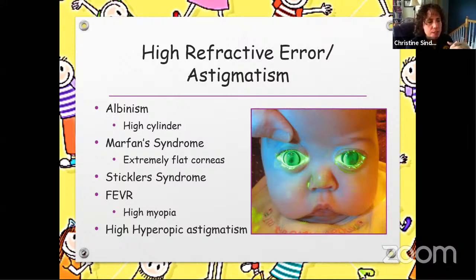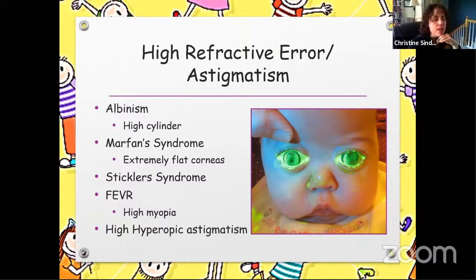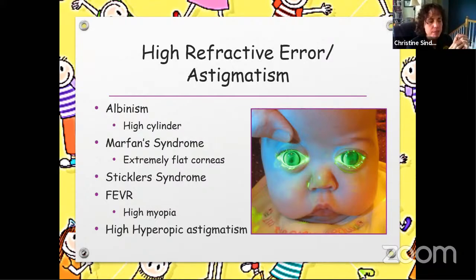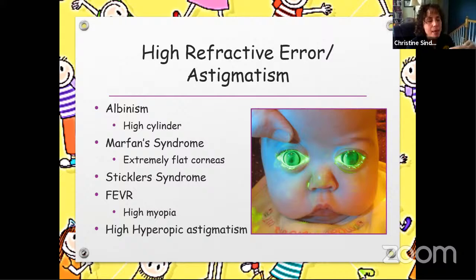Children with Stickler syndrome are also very highly myopic. Familial erosive vitreoretinopathy cases are extremely myopic as well. Children with high hyperopic astigmatism are more prone to having amblyopia, so you need to correct the hyperopia and the astigmatism together — which can prove some challenges. These kids do better in some type of rigid correction for visual development than they do in a soft contact lens. While it may be tempting to put that child in a soft lens, they will actually do better with a gas perm option.